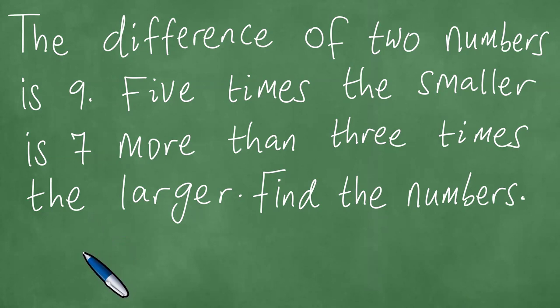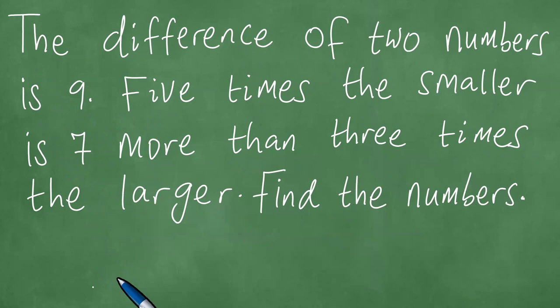In this lesson, we shall solve this word problem in front of us step by step. The difference of two numbers is nine. Five times the smaller is seven more than three times the larger. Find the numbers.